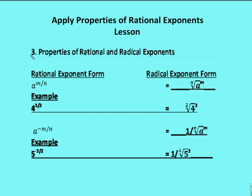Properties of rational and radical exponents: A to the M over N — if I convert that between rational exponent and radical exponent form, I go from A to the power of M over N, which is the same as the nth root of A to the M. For example, 4 to the 3 halves would be rewritten as the square root of 4 all taken to the third power. The numerator is the power, the 2 is the index.